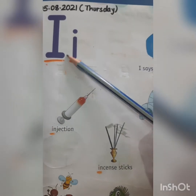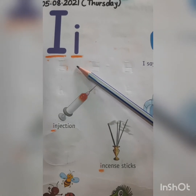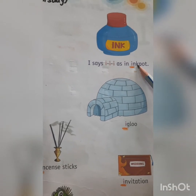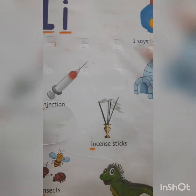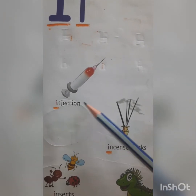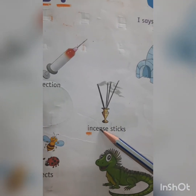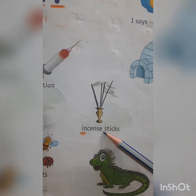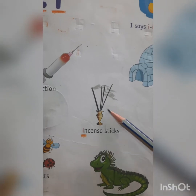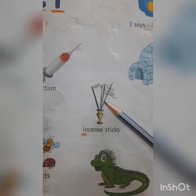This is letter I. Capital I. This is small i. What is the sound of letter I? It is 'I' in inkpot. I-N-K-P-O-T. Inkpot. I-N-J-E-C-T-I-O-N. Injection. I-N-C-E-N-S-E S-T-I-C-K-S. Incense sticks. You have to say the name of the picture children.